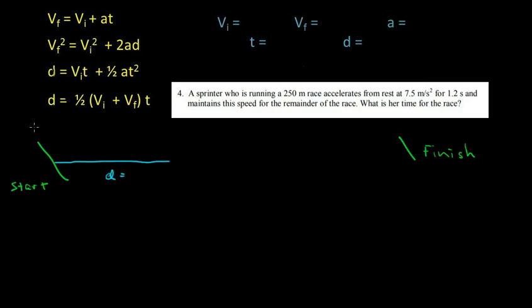But we do know some things. We know that the initial velocity equals 0 meters per second. We know that the runner accelerated at a rate of 7.5 meters per second squared. And she did that for a time of 1.2 seconds, and it brought her to a certain distance that we don't know.